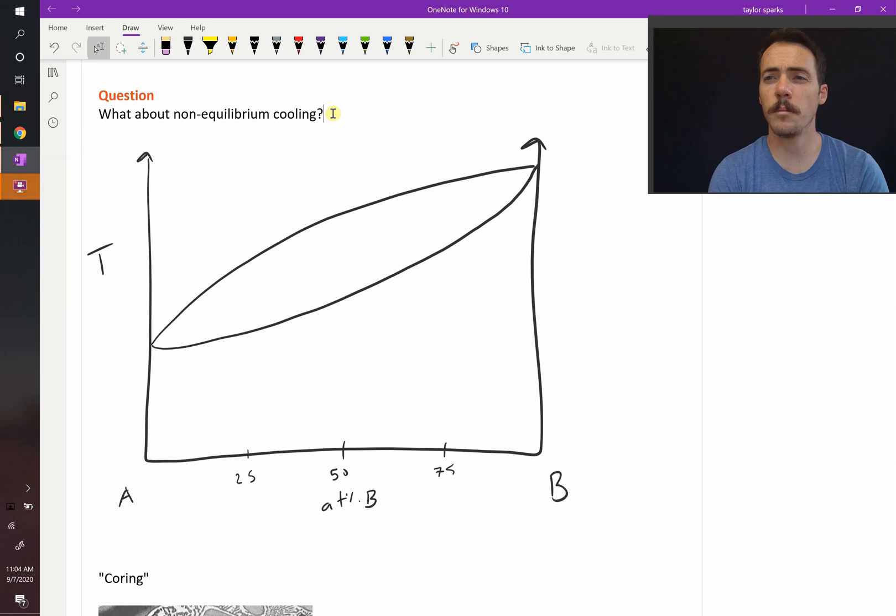A recurring theme in this class with these phase diagrams is that they represent what exists at thermodynamic equilibrium, meaning you let it sit for as long as it needs to reach its final lowest energy state. Well, sometimes that doesn't happen. Here's an example of that.